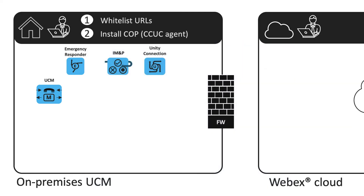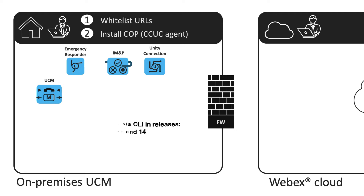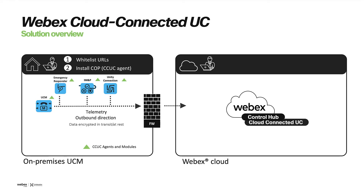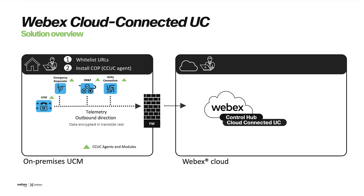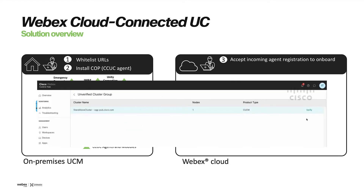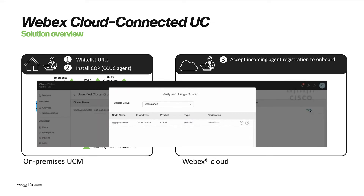A big note here is that administrators can enable the CCUC agent via CLI, if running the below versions. After the CCUC agent is installed, an agent registration request in Control Hub will be created. Administrators will then have to validate or reject incoming requests manually with a unique code.